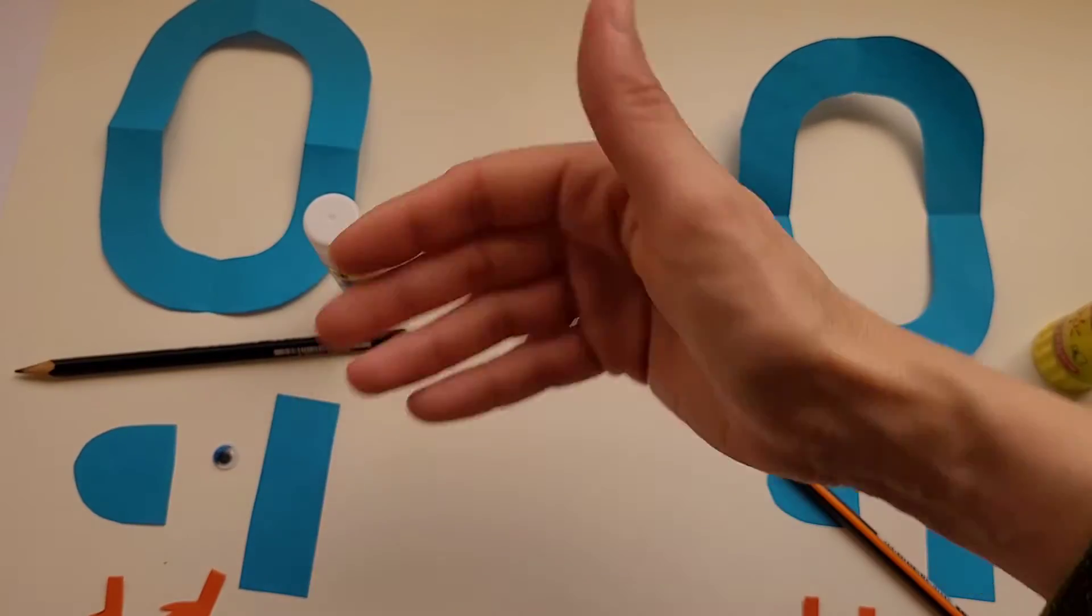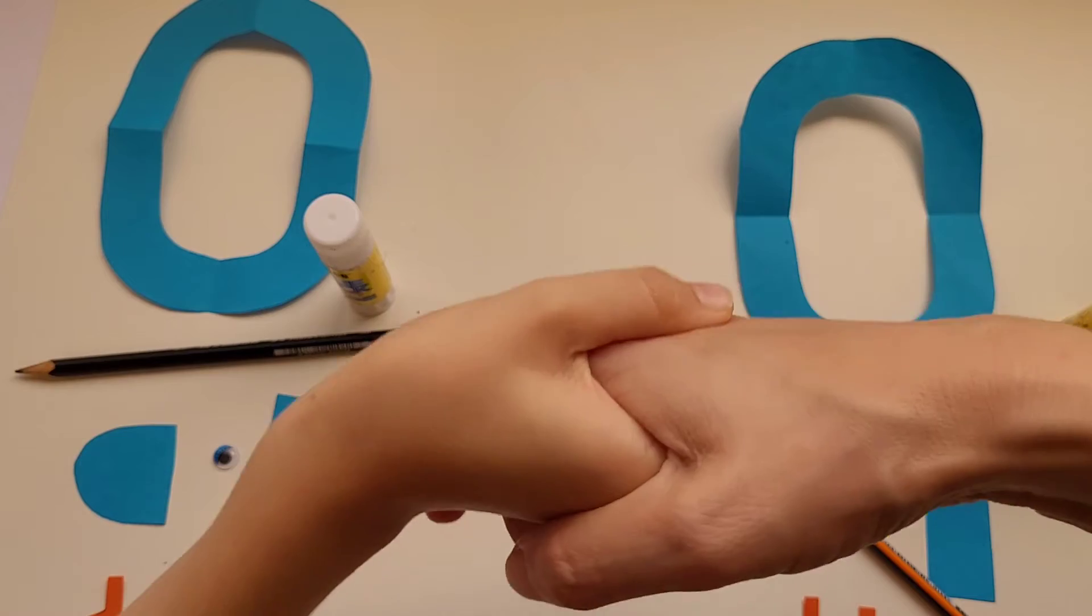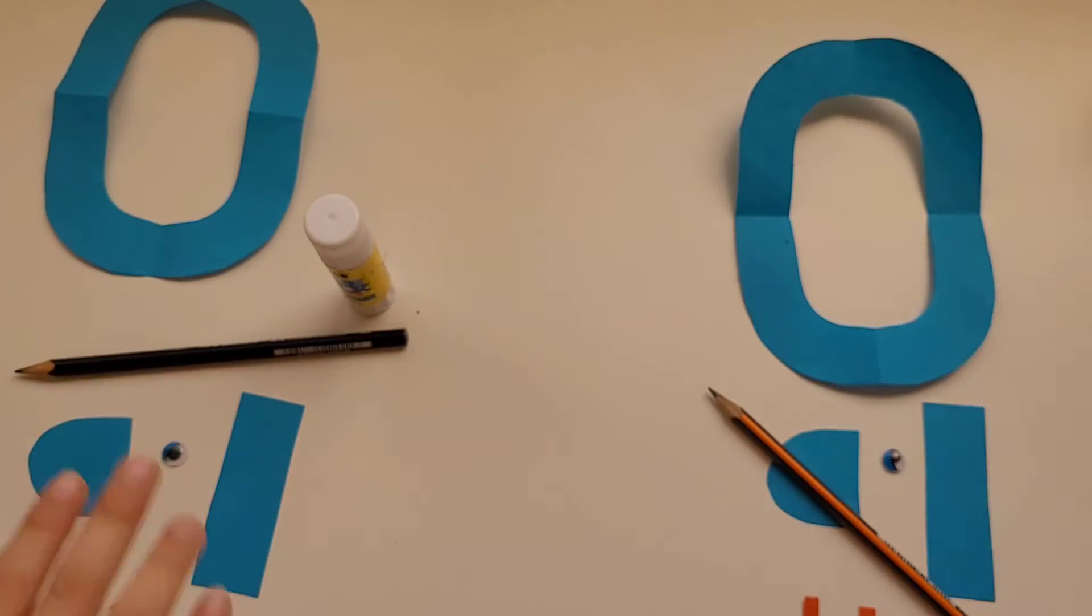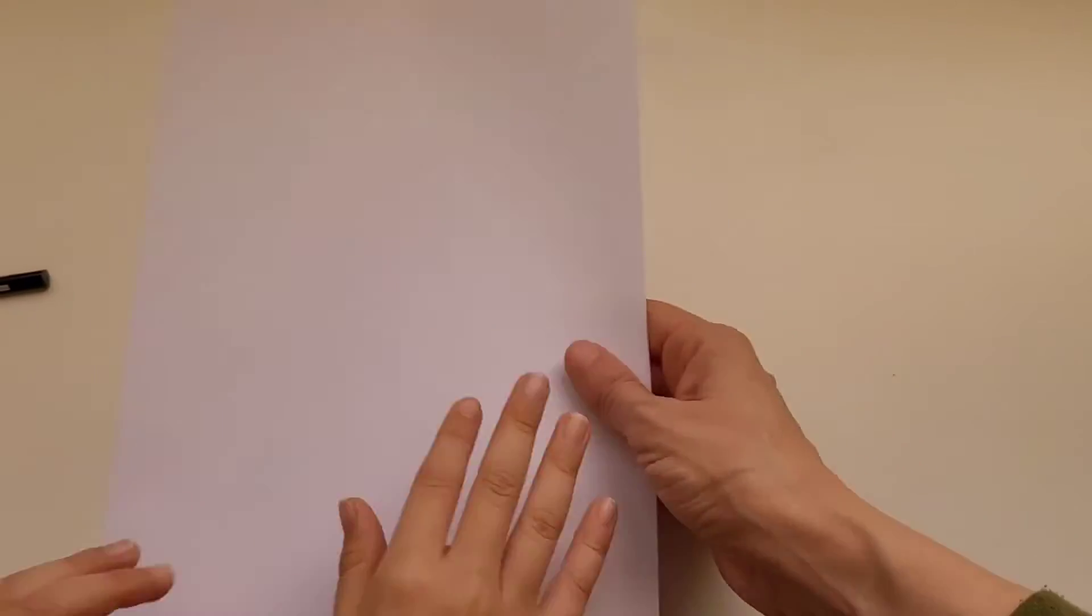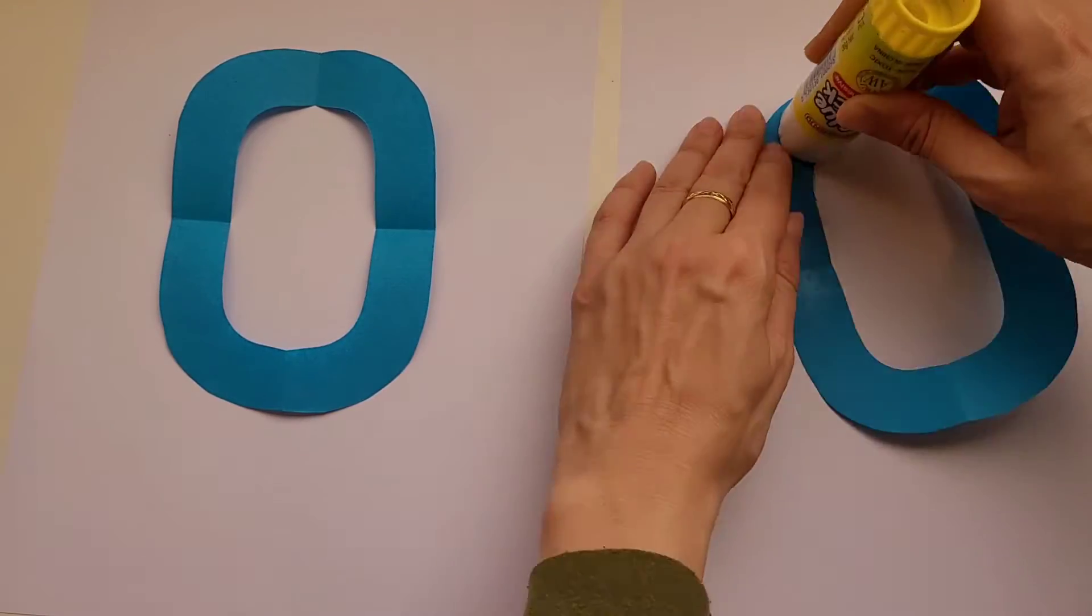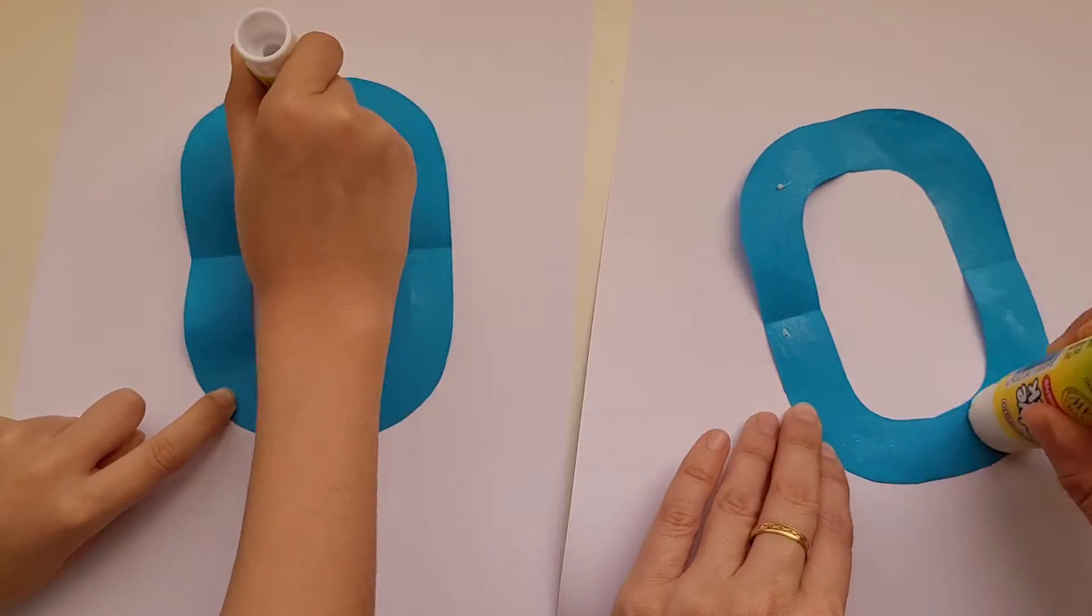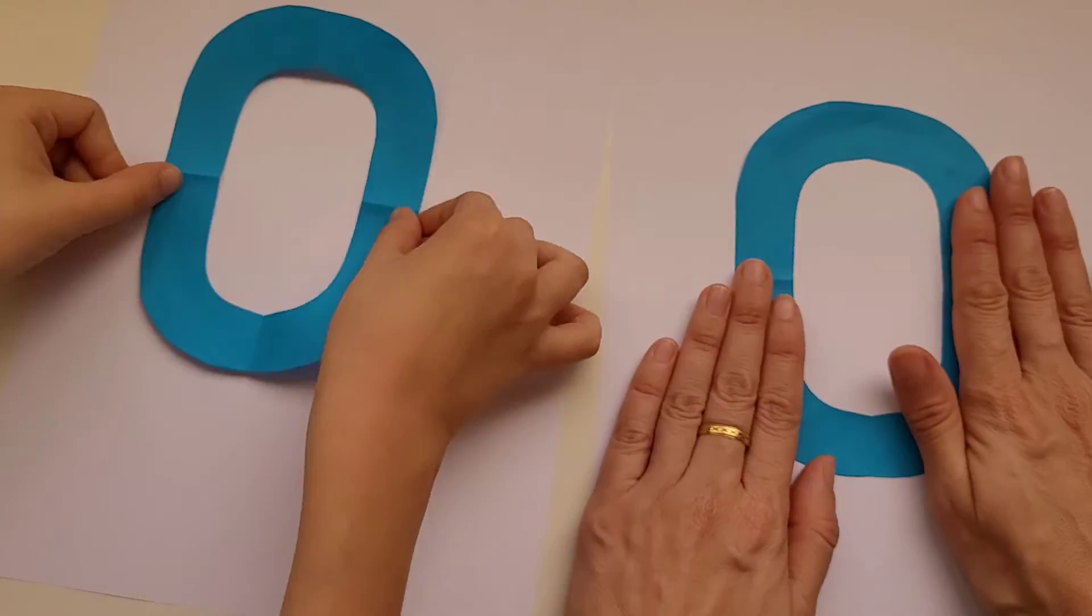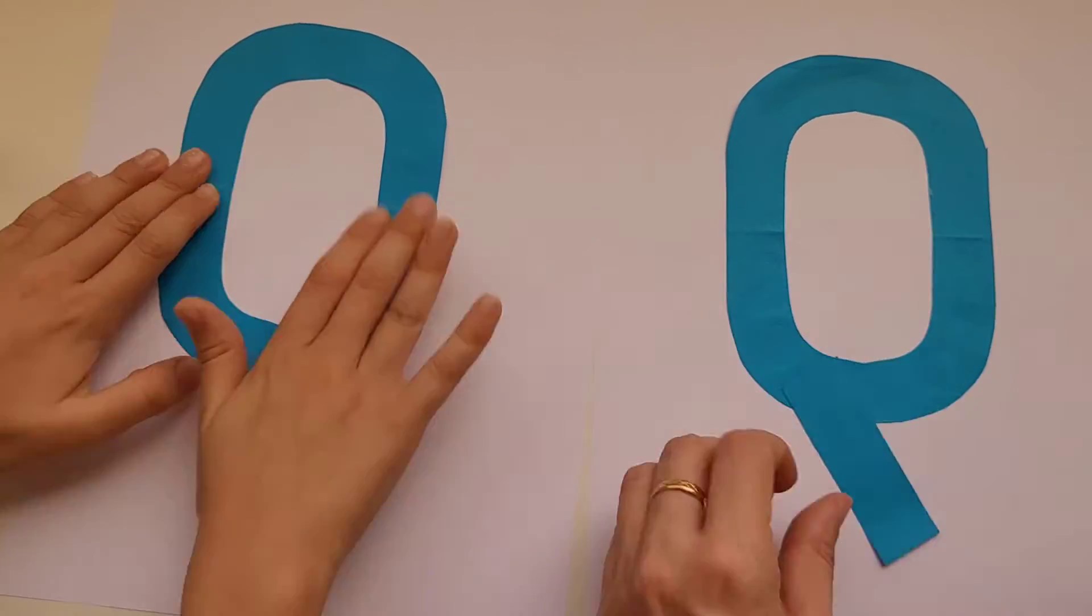Hello my friend. Hi. Are you ready to make a craft with me? Yeah. Today we're going to make a craft about the letter Q. Do you know any words that start with the letter Q? Queen, quilt, and quail. Very good. And today we're going to make a quail.